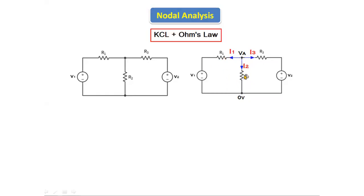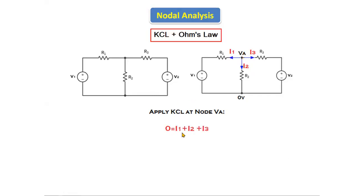Here i1 is the current passing through resistor R1, i2 is the current passing through R2, and i3 is the current passing through R3. These three currents are leaving from this node. The first step is to apply KCL at node Va. There are no currents entering, so entering currents equal zero, and leaving currents are i1 + i2 + i3.